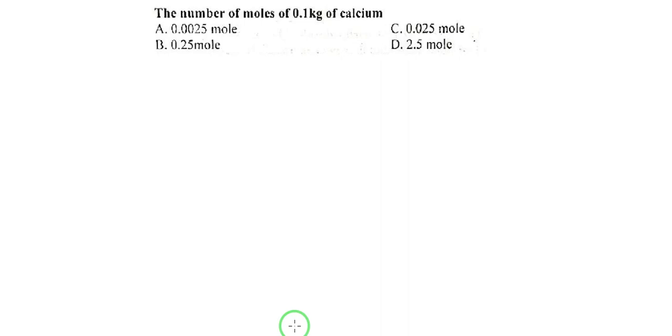Hello student, welcome to I Am Chemist. We have another MCQ from stoichiometric calculation: the number of moles of 0.1 kg of calcium. kg is the kilogram, it is the unit of mass, so first of all we need to convert 0.1 kg into grams.